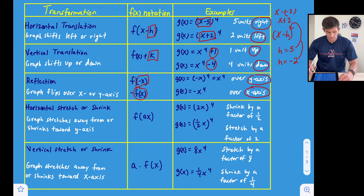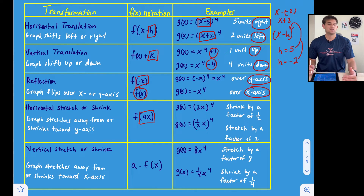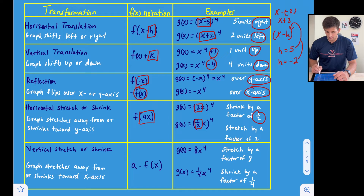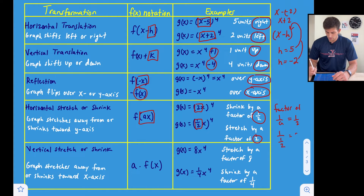A horizontal stretch or shrink stretches the graph away from or shrinks it toward the y axis. There's multiplication involved with x, and we use the variable a. Just like horizontal translation, horizontal stretch and shrink is opposite of what we'd expect. If we see a 2, it's actually a shrink by a factor of one half. If we see one half, it's actually a stretch by a factor of two — because we're stretching or shrinking by a factor of one over a.